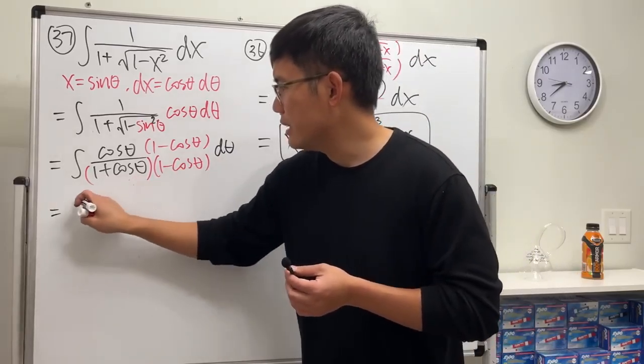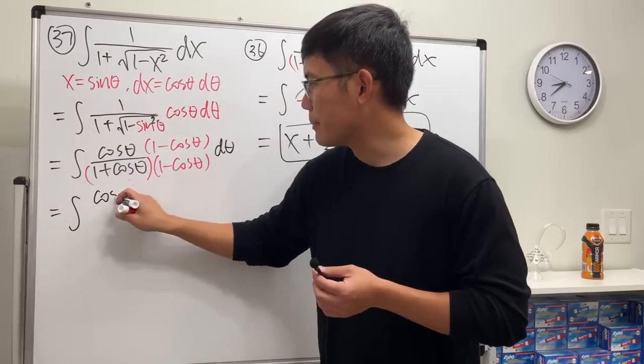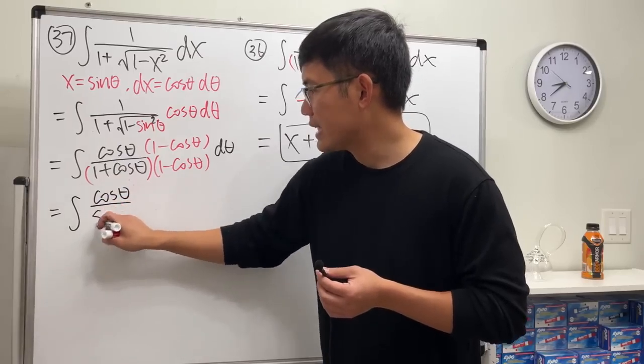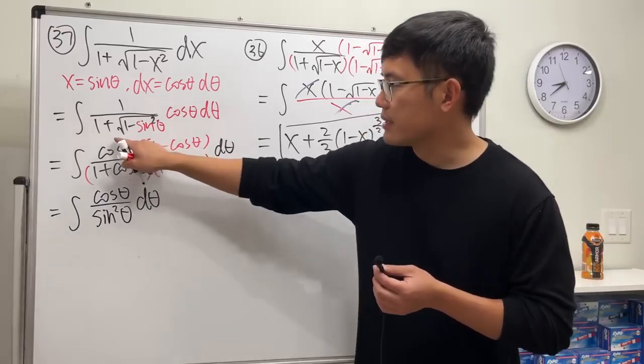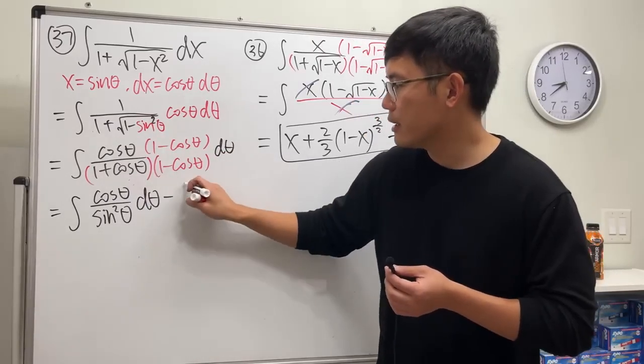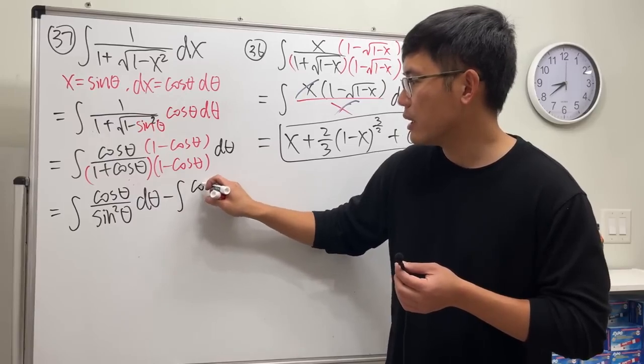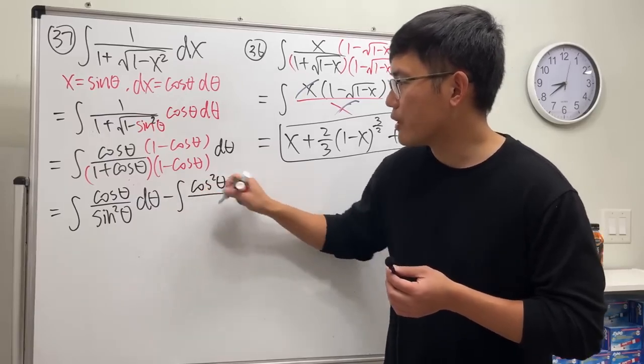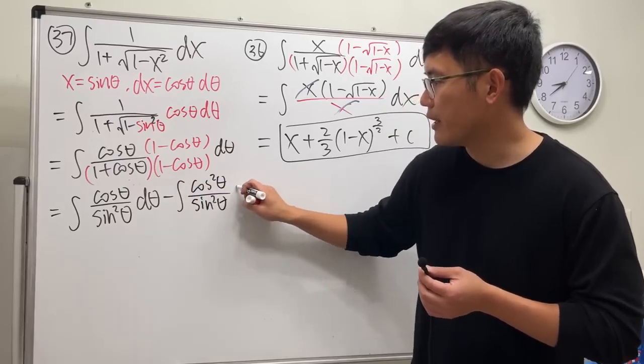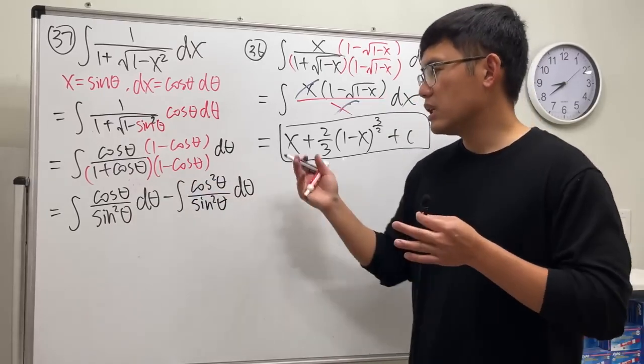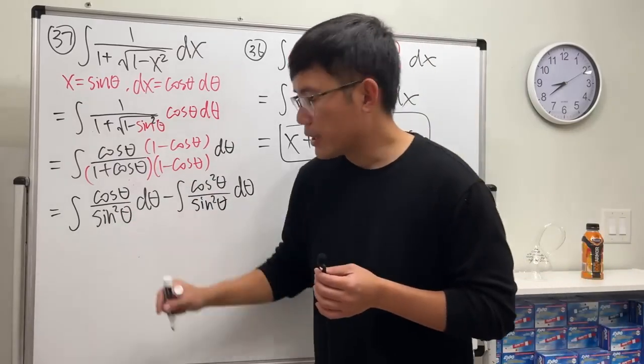And I think I'm just going to write this: integral cosine theta on the top over sine square theta. Next, cosine times cosine is cosine square over again the same denominator, which is sine square theta. So that's what I have for this right here.